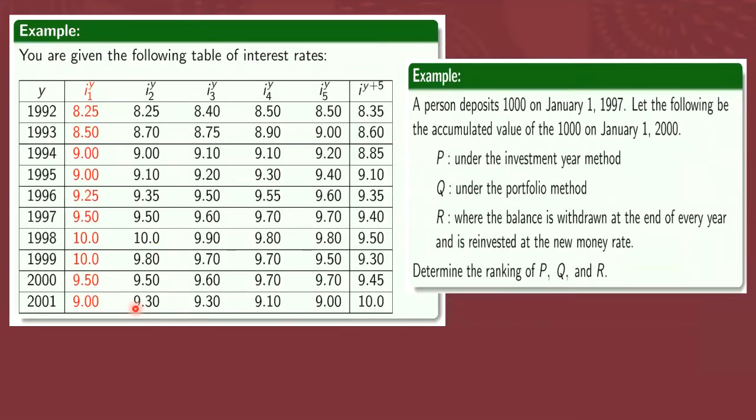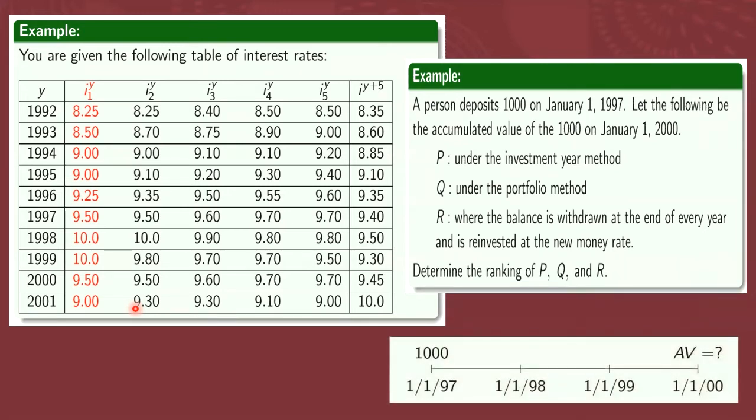Now, let's answer this example. Of course, using the given table of interest rates. So, a man deposits 1,000 on January 1, 1997. And then, we are going to get the accumulated value of this 1,000 on January 1, 2000. Using different methods. Okay? So, maybe it's nice to have a time diagram like this. So, ininvest yung 1,000 on January 1, 1997. And then, kukunin natin ang accumulated value at this point. January 1, 2000. Okay? So, nakita nyo, tatlong taon naka-invest yung 1,000.